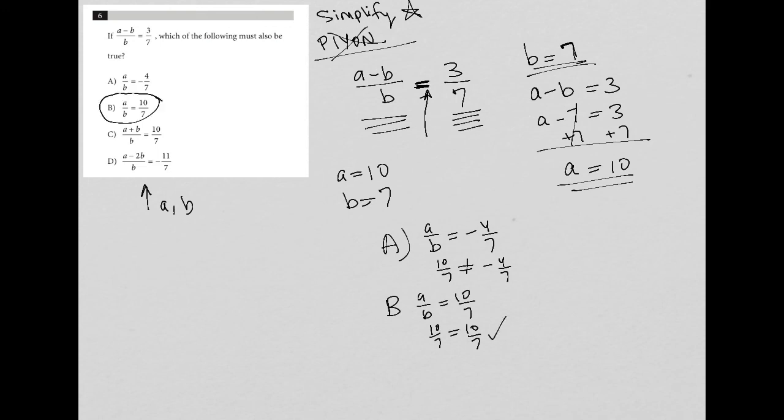Again, I only check multiple answers in situations like this if I made up the values that I'm plugging in for the variables, but in this case, this 10 came from the information here. This 7 came from the information here. So I trust that choice B is the correct and final answer.